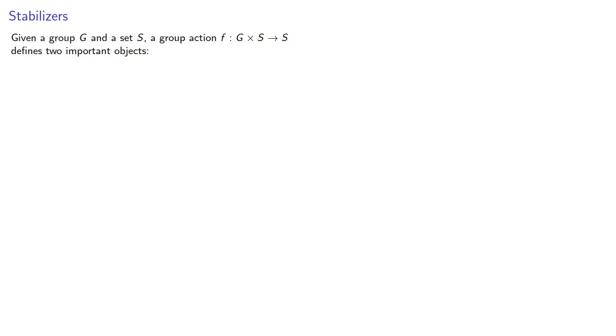Given a group G and a set S, a group action F from the Cartesian product G by S into S defines two important objects.